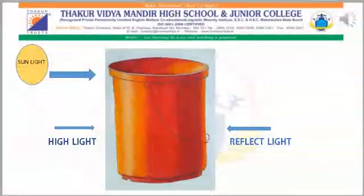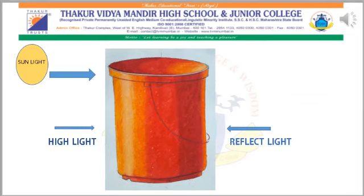Here we have a complete red color bucket object with three-dimensional effect. In this drawing, keep three things in your mind. First, see the direction of the sunlight. Second, in the same direction the highlight part will come. And in the opposite direction, the reflected light will come.